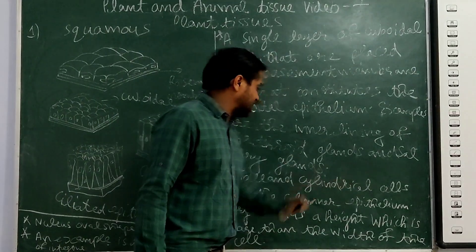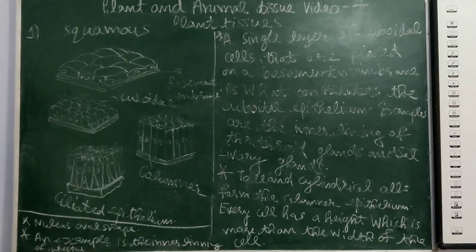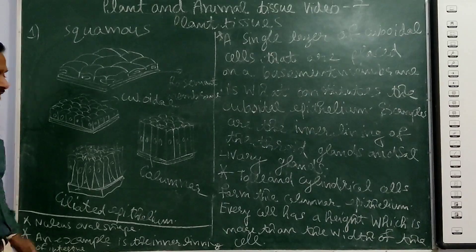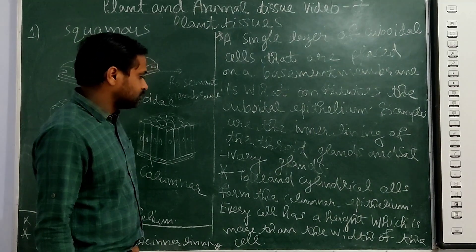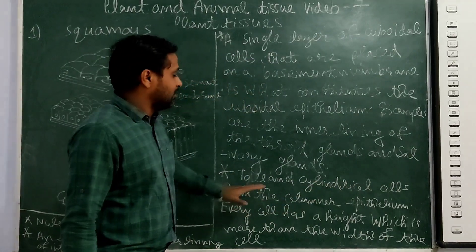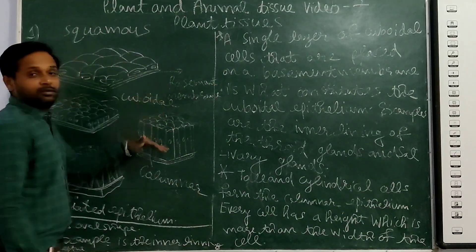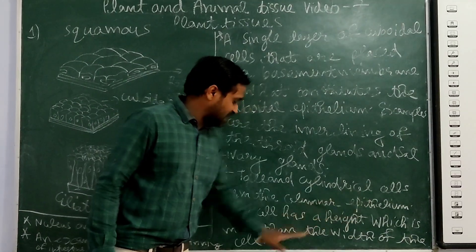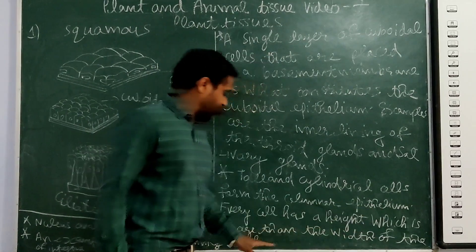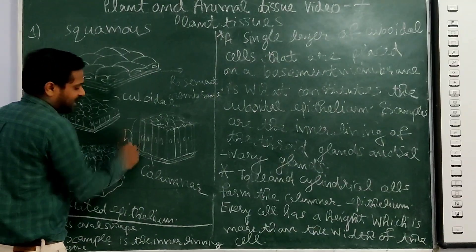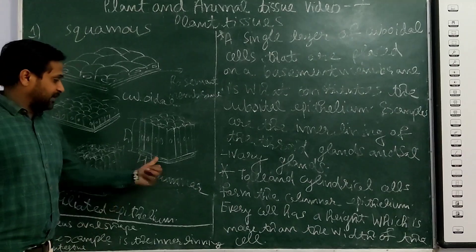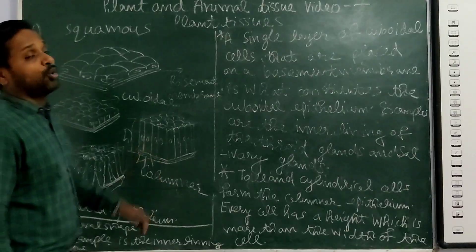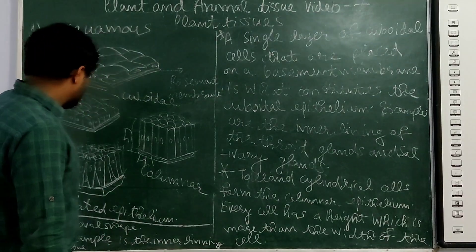Now, tall and cylindrical cells form the columnar epithelium. Every cell has a height which is more than the width of the cell — the height of the cell is more than the width. The basement membrane is there, and the nucleus is also present. The nuclei are oval in shape. An example is the inner lining of the intestine.